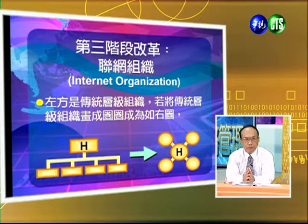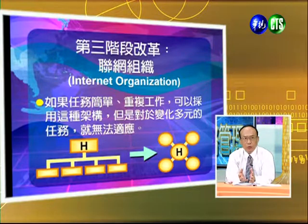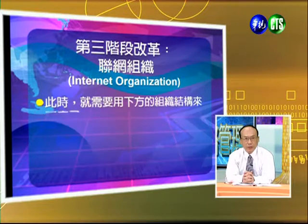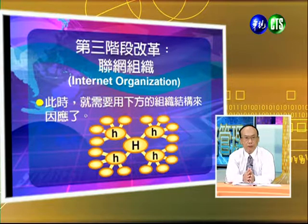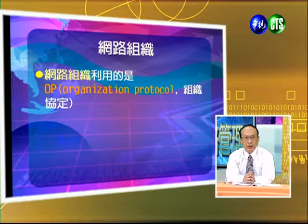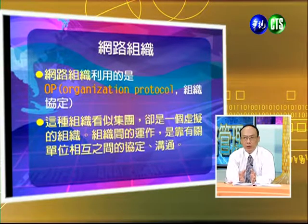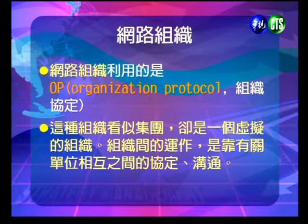傳統官僚式組織有總部，總部下面有事業單位。聯網組織則不一樣，它變成一種彈性變形蟲的方式，從一個Headquarter變成了很多小的總部形成一個網路。最重要的是它有一個組織協定（protocol），組織的運作不需要經由總部的同意，只要符合聯網組織裡面的協定就可以來做。今天因為時間關係，我們就跟同學介紹到這裡，謝謝同學收看，我們下次同一時間再會。